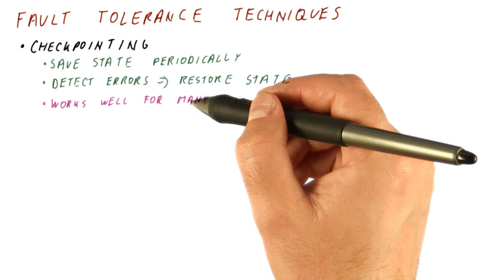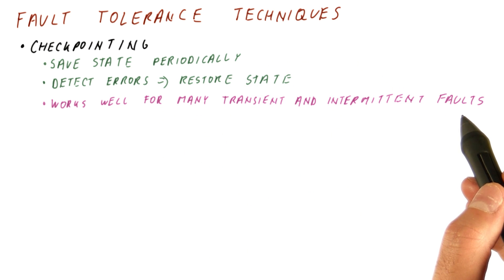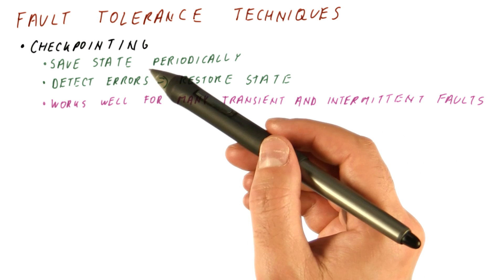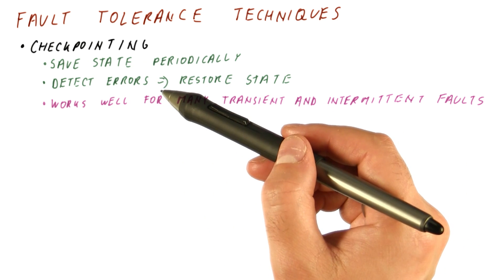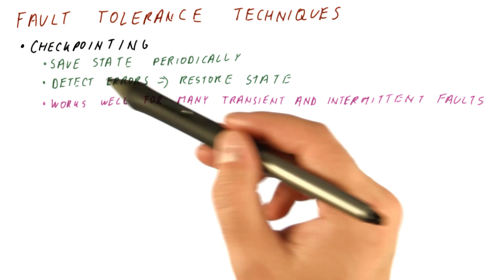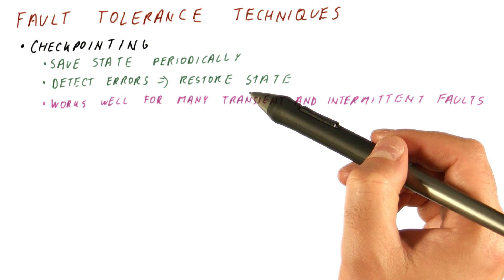This type of technique works well for many transient and intermittent faults. The idea is that we save the state of the system when it's functioning normally. If a fault occurs, we detect errors that result from that and restore the system to a state that was not affected by the fault.